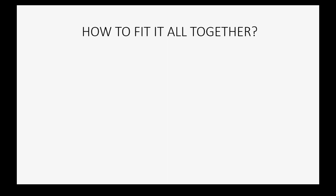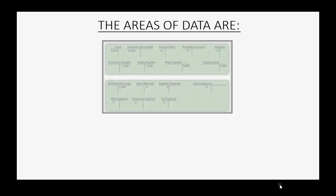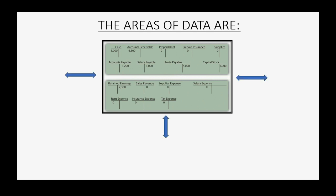So how does it all fit together? The numbers must match. The old system's ending numbers must be the same as the new system's beginning numbers for the same date — but for all areas of data, not just the trial balance and the chart of accounts. The main area of data comes from the chart of accounts and the general ledger, but these accounts must reconcile and match with peripheral or subsidiary areas of data.